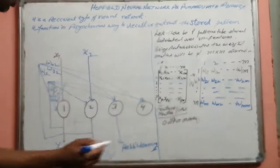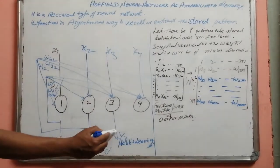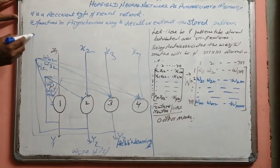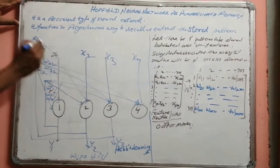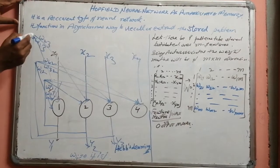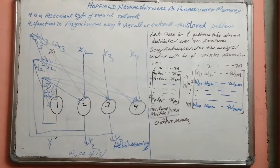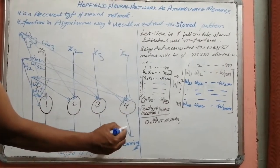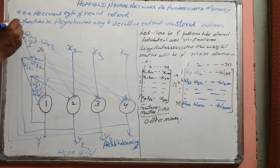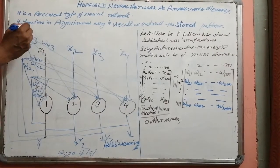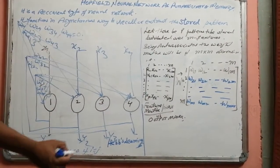The same trend follows for neuron number three: it receives X3 as input, then Y3 is fed back with weights W13, W23, and W43. For neuron number four, the output is also fed back, and when it goes to each neuron it is named W14, W24, W34 respectively, while W44 equals zero as per the equation.